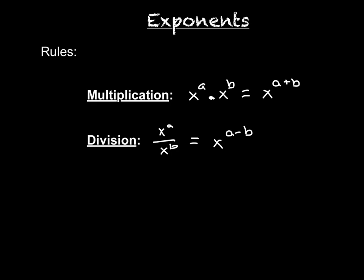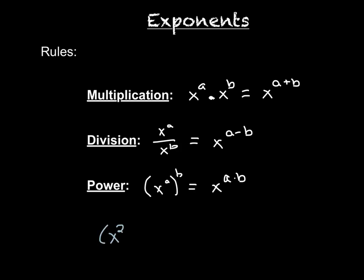The final rule we're going to talk about today is called the power rule. The power rule says that whenever you have a power raised to another power, you just multiply those two numbers. For example, let's say we had x squared to the third power. That really means x squared times x squared times x squared. Remember, when we're multiplying terms with the same base, all you do is add the exponents. So two plus two plus two is six, leaving us with x to the sixth.